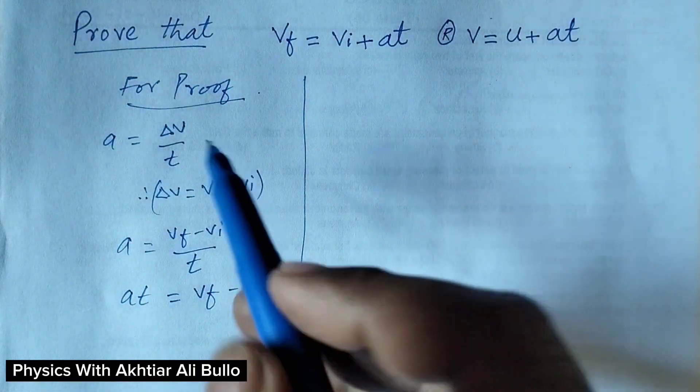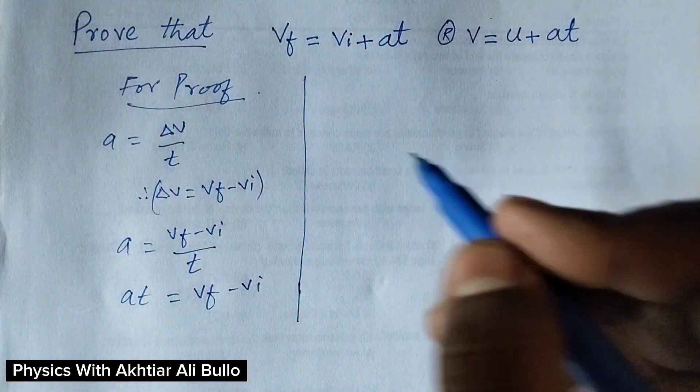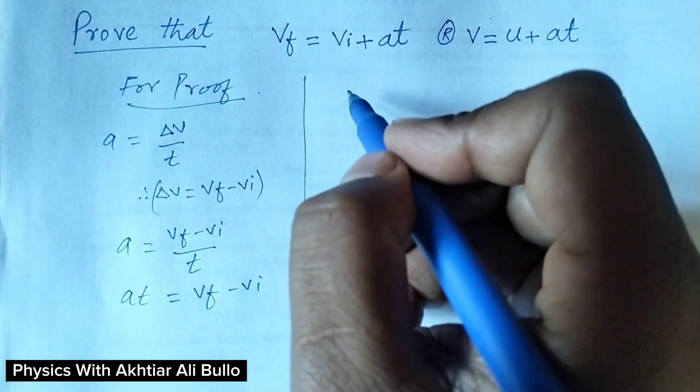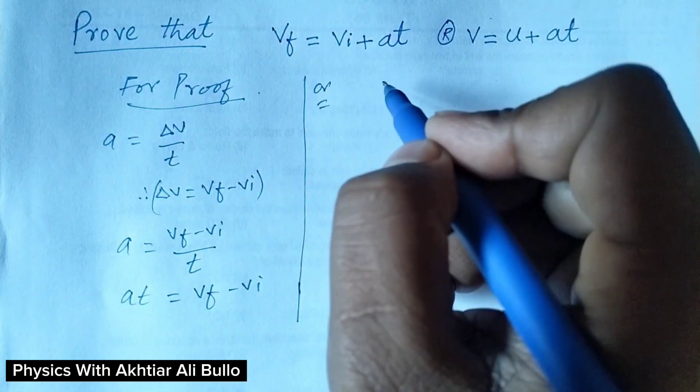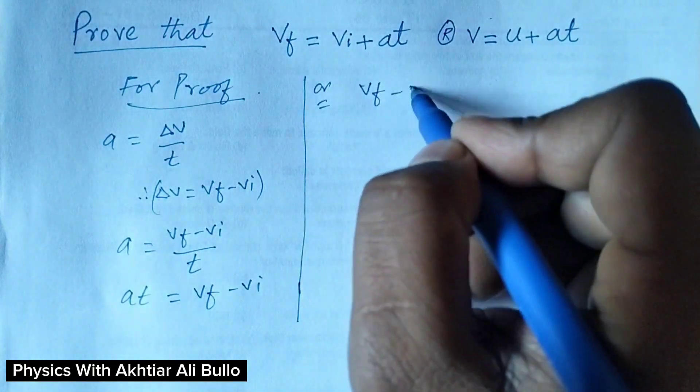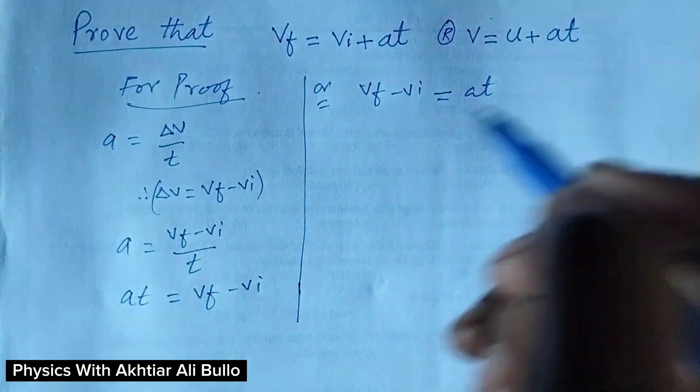We can also write it as VF minus VI is equal to AT.